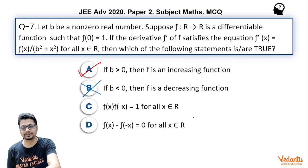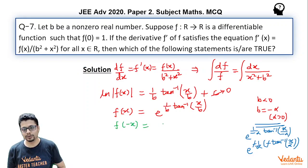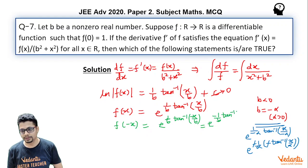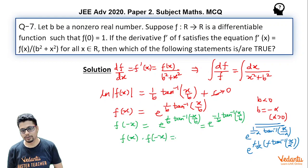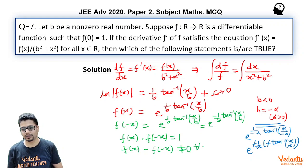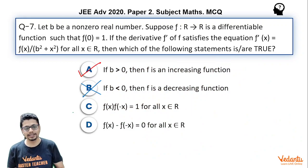Now for options C and D, consider f(−x) = e^((1/b) · arctan(−x/b)). Since arctan(−x/b) = −arctan(x/b), we get f(−x) = e^(−(1/b) · arctan(x/b)), which is the reciprocal of f(x). Therefore f(x) · f(−x) = 1 for all x, so option C is correct. However, f(x) − f(−x) is not necessarily zero for all x, so option D is wrong.